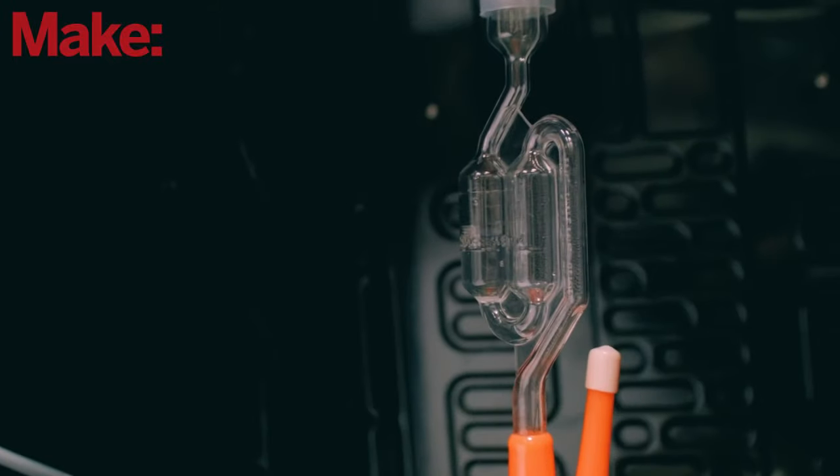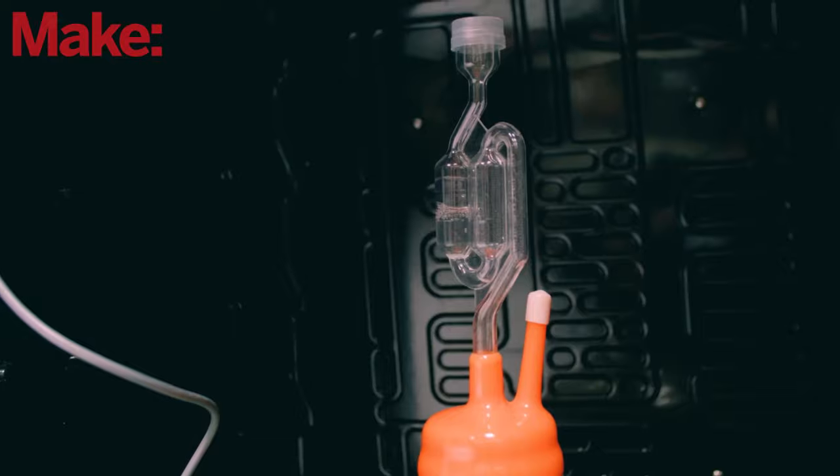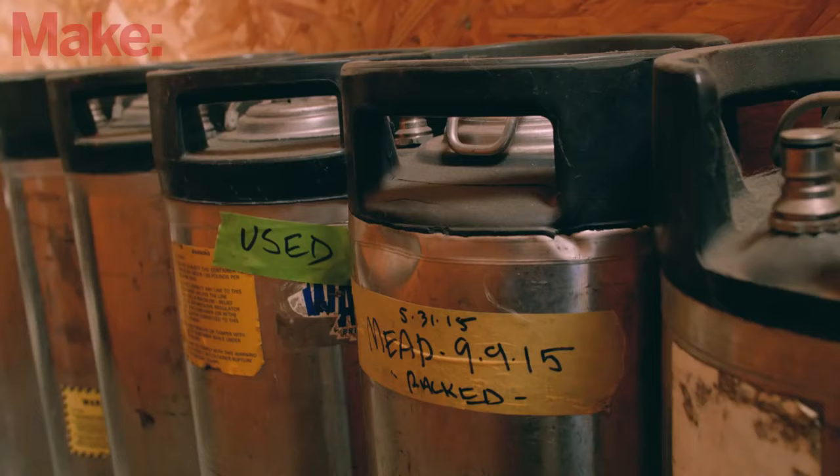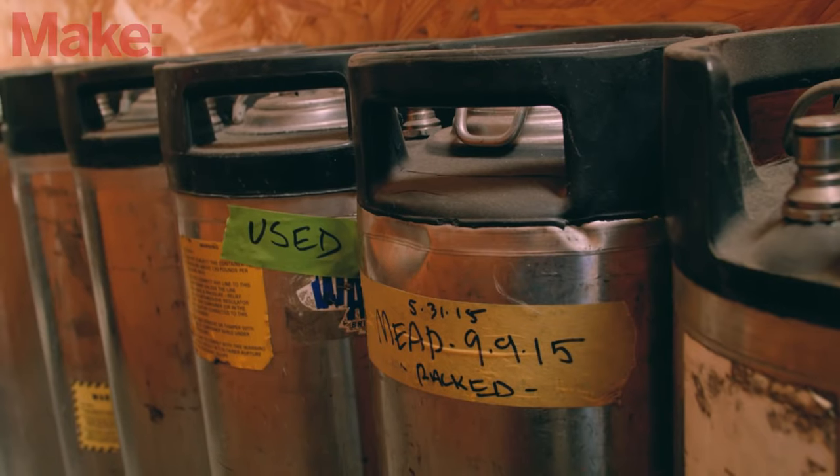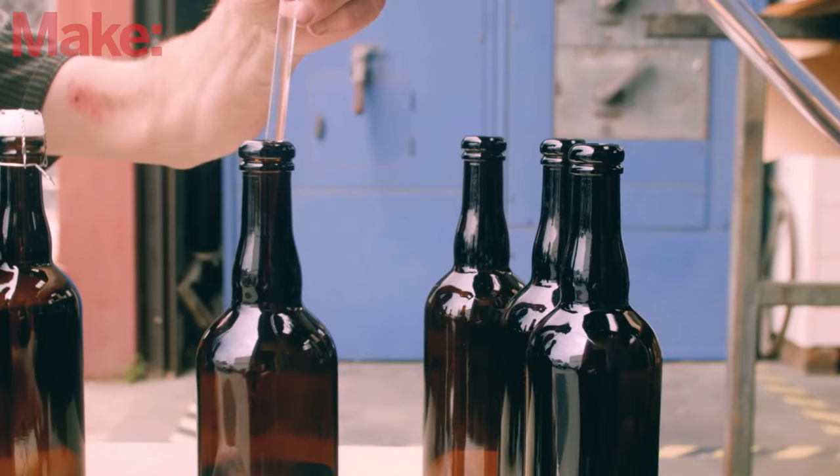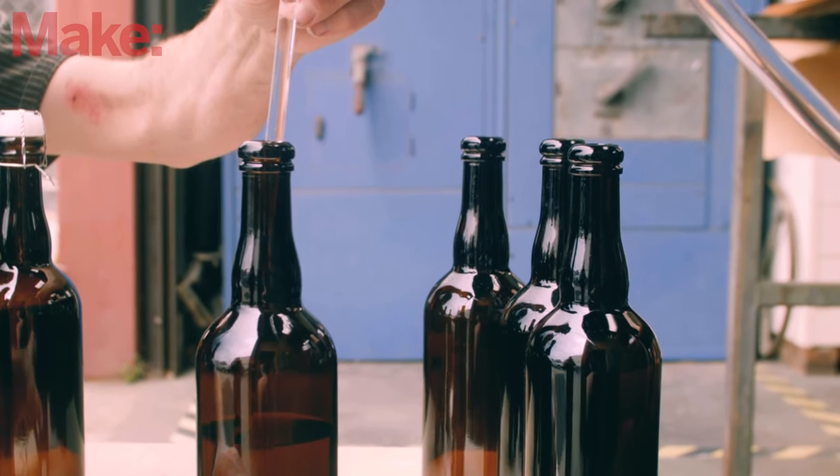This primary fermentation will continue for about one month until the yeast action is slowed considerably. After four weeks, it's a good practice to rack the mead into another sanitized carboy to separate it from the bulk of the yeast sediment, which could break down and harm the flavor of the mead in the long run. When the mead has finished its secondary fermentation and becomes still, the yeast will settle out, leaving it quite clear.